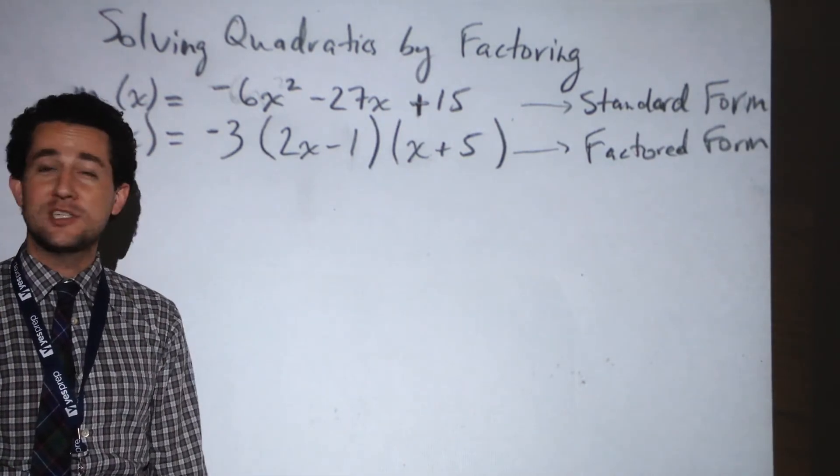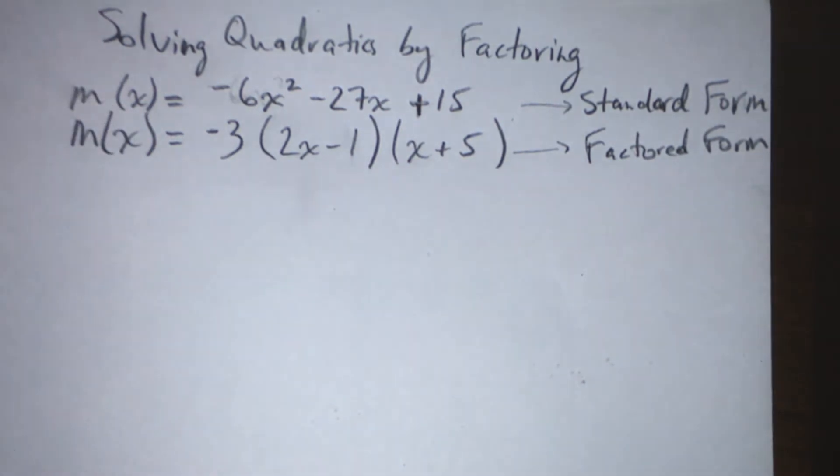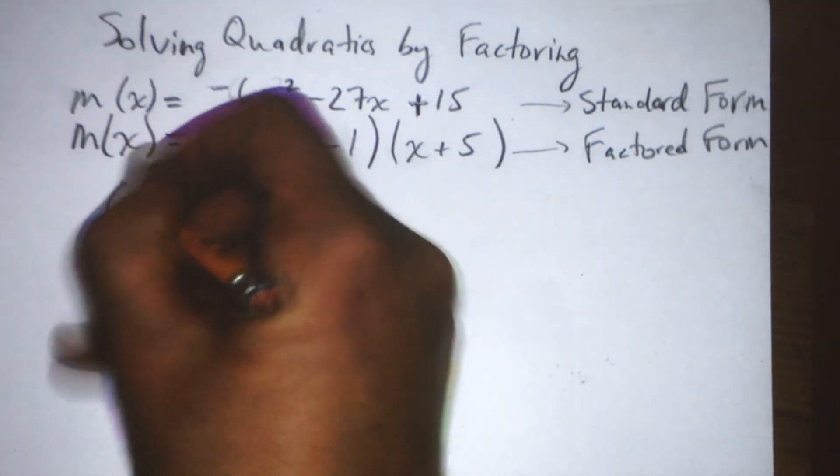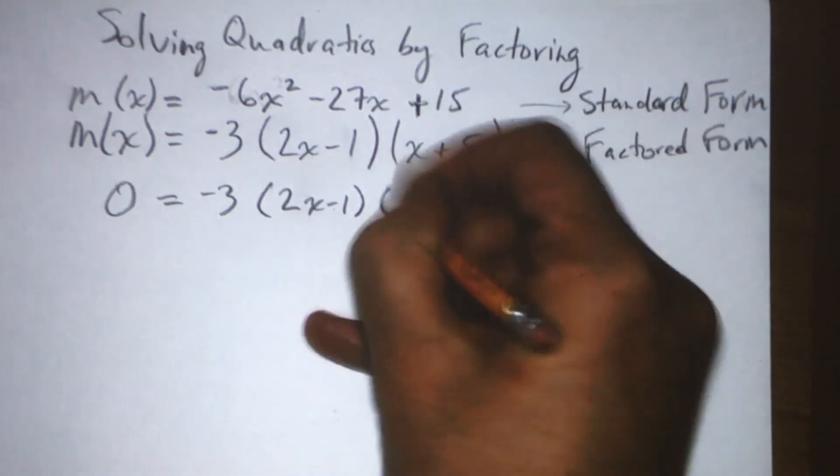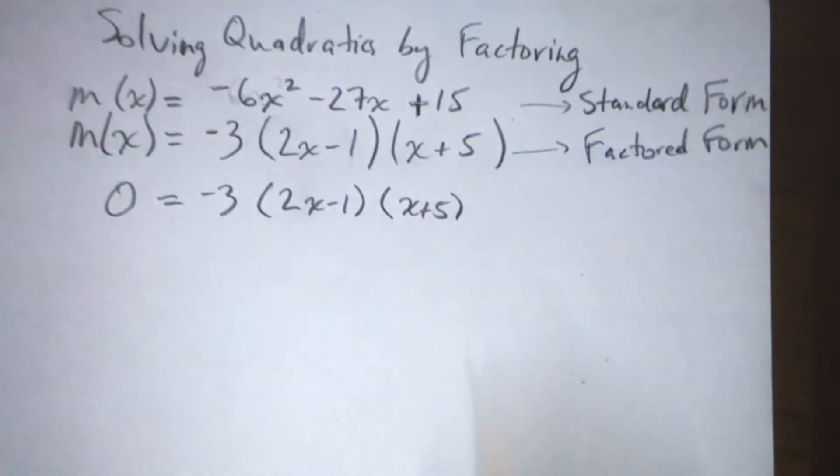Now, to solve for the roots, it is just so simple. We set the function equal to 0. So we'll say 0 equals negative 3 times 2x minus 1 times x plus 5. Easy enough.